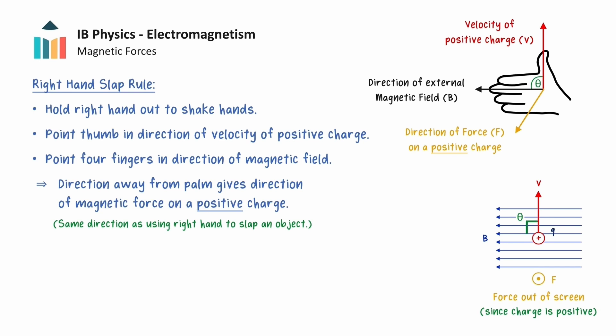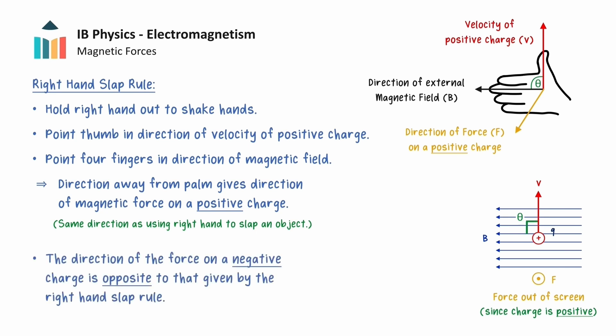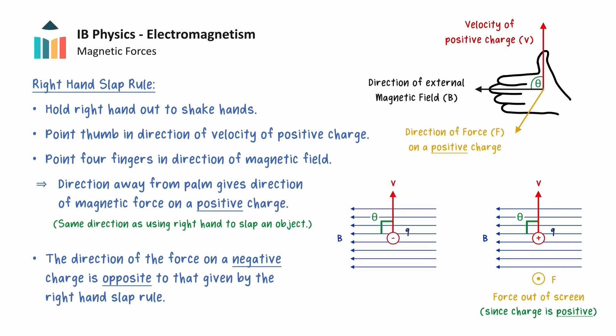Notice how we have stressed that this right-hand rule gives the direction of force on a positive charge. If the moving charge is negatively charged, such as an electron, then the direction of force is opposite to that given by the right-hand slap rule. So if instead we had a negative charge moving upwards in a magnetic field that points to the left, we will still align the right thumb upwards and the four right fingers to the left. However, the force on the negative charge will be given by the direction toward the palm of the right hand, so in this case the force would point into the screen.